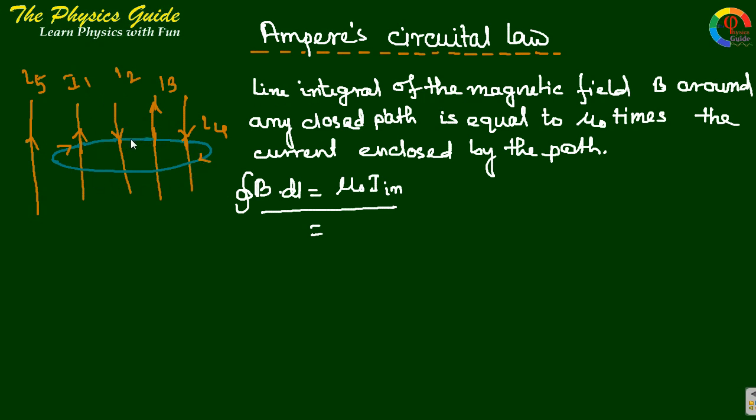The line integral means that total magnetic field along the line is equal to mu-not times I enclosed by the path. Mathematically this gives B dot dl equals to mu-not I-in.